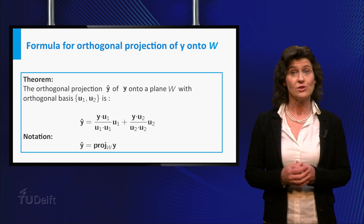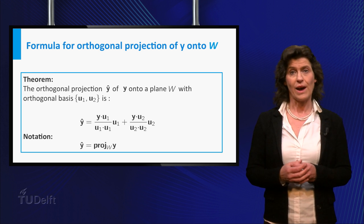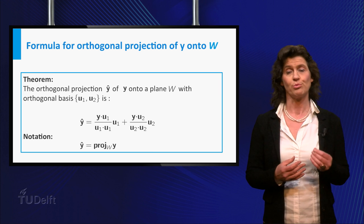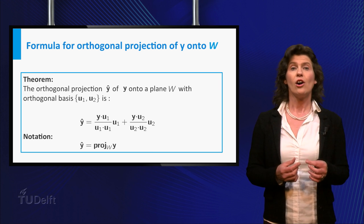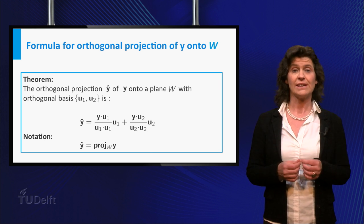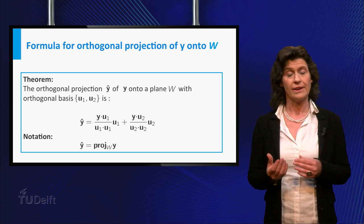So, as a consequence, you get that Y hat can be written as the sum of the orthogonal projections of Y onto the two lines generated by the orthogonal vectors U1 and U2.